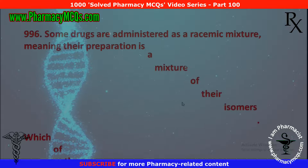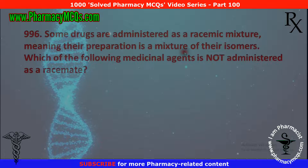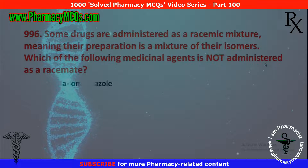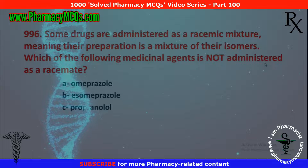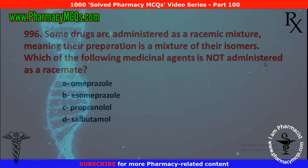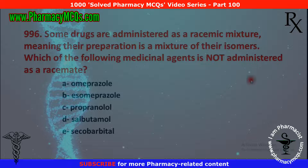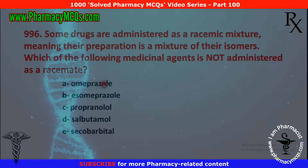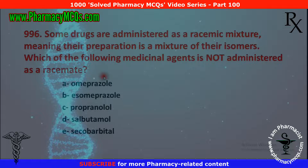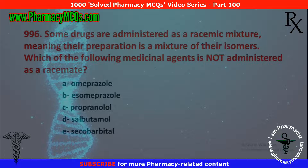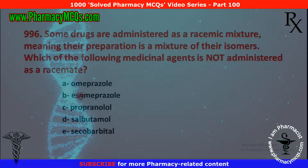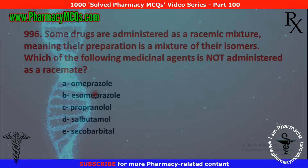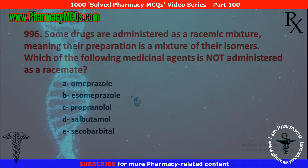Next MCQ: some drugs are administered as racemic mixtures, meaning their preparation is a mixture of their isomers. Which of the following medicinal agents is not administered as a racemate? Options are: omeprazole, esomeprazole, propranolol, salbutamol, and secobarbital. Omeprazole, propranolol, salbutamol, and secobarbital are all racemic mixtures. Esomeprazole is not a racemic mixture. So option B is correct.